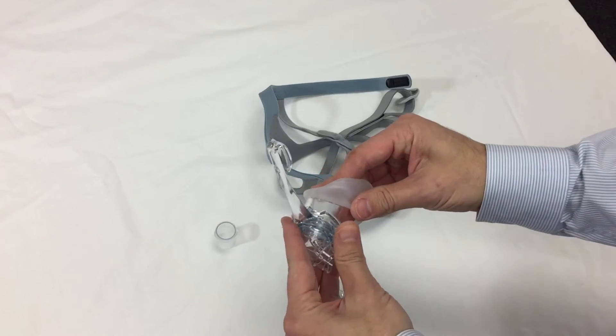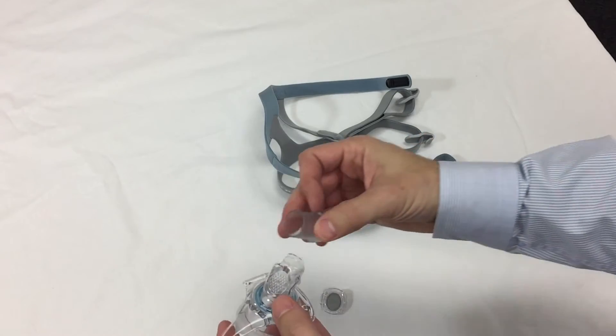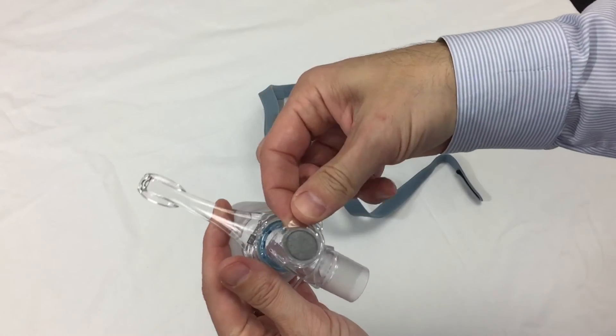So as the cushion wears down over time, you can just replace the cushion. You can see how easy that is to pop back together. There's the elbow, which swivels all the way around.